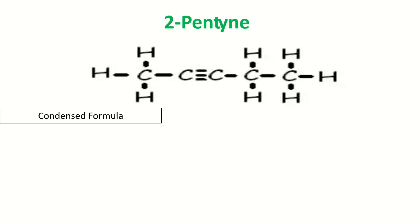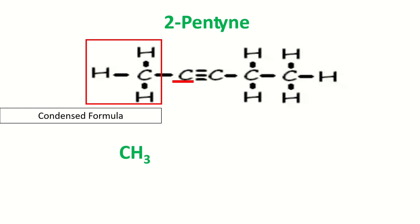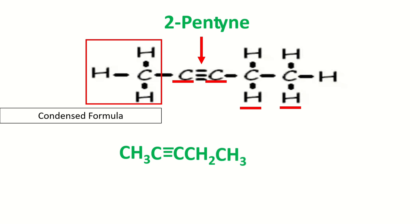For the condensed formula: the first carbon atom has 3 hydrogen atoms, so it is CH₃. The second carbon atom has no hydrogen atoms — just C and a triple bond. The third carbon atom also has no hydrogen atoms. The fourth carbon atom has 2 hydrogen atoms, and the last carbon atom has 3 hydrogen atoms. This is the condensed formula of 2-pentyne.